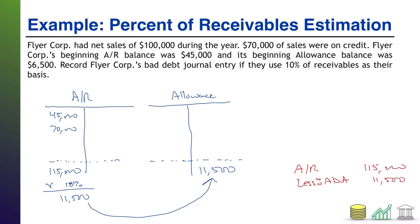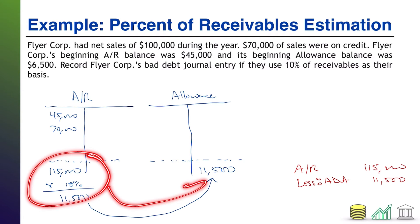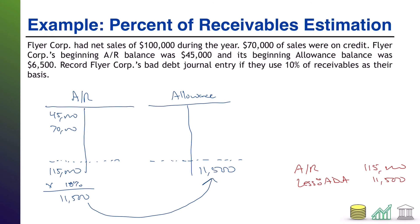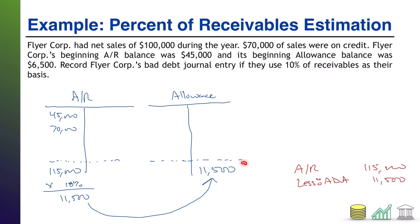That's why this is a balance sheet approach — we're using one balance sheet number (AR) to take a percentage and calculate a corresponding balance sheet number (the allowance). But this still doesn't get us to the journal entry, because this only tells us what we need in the allowance account.